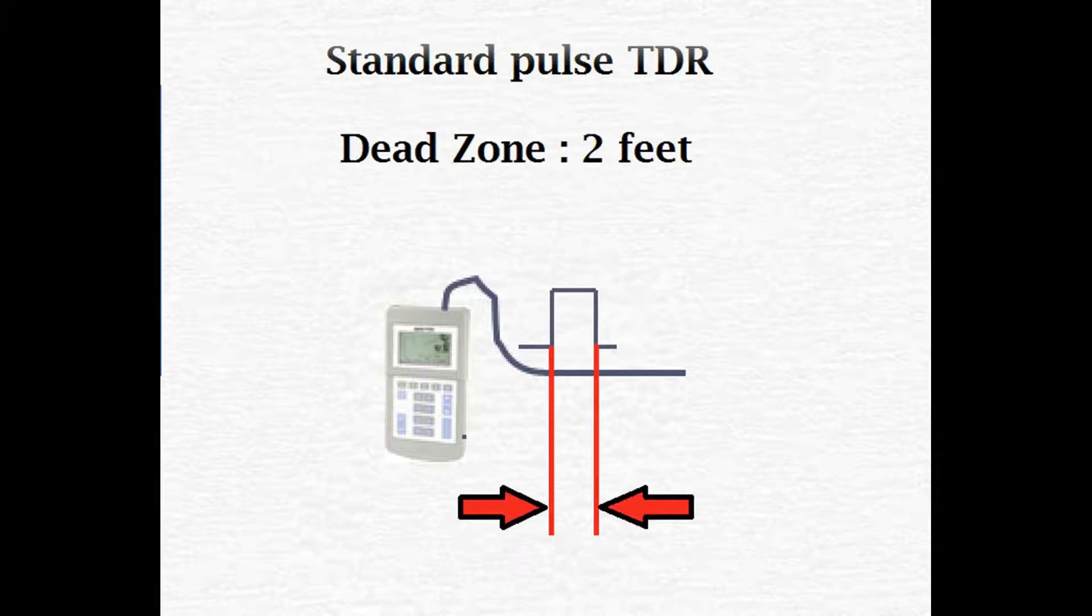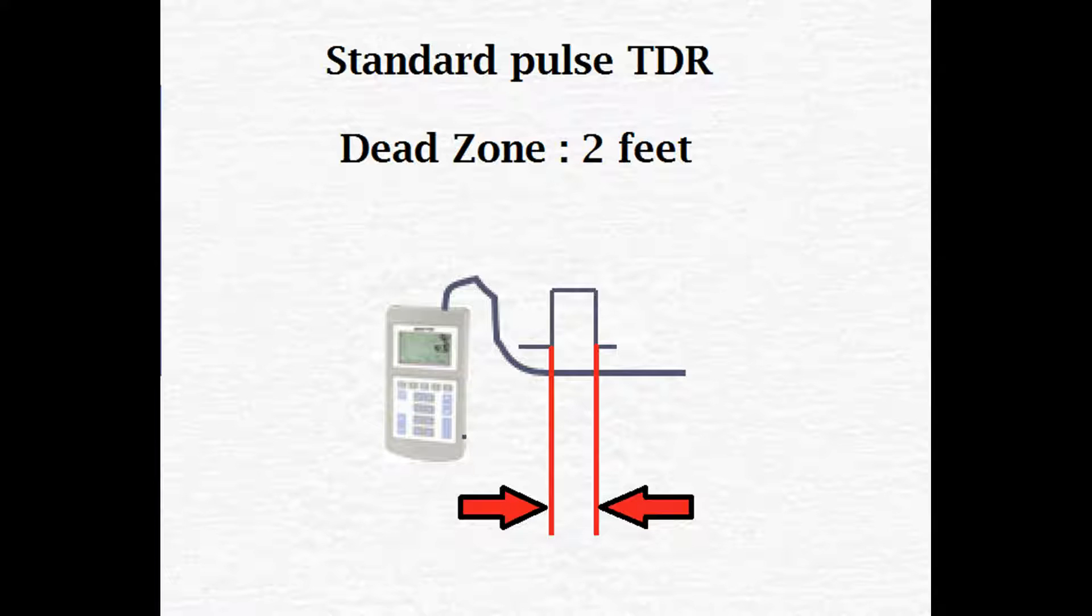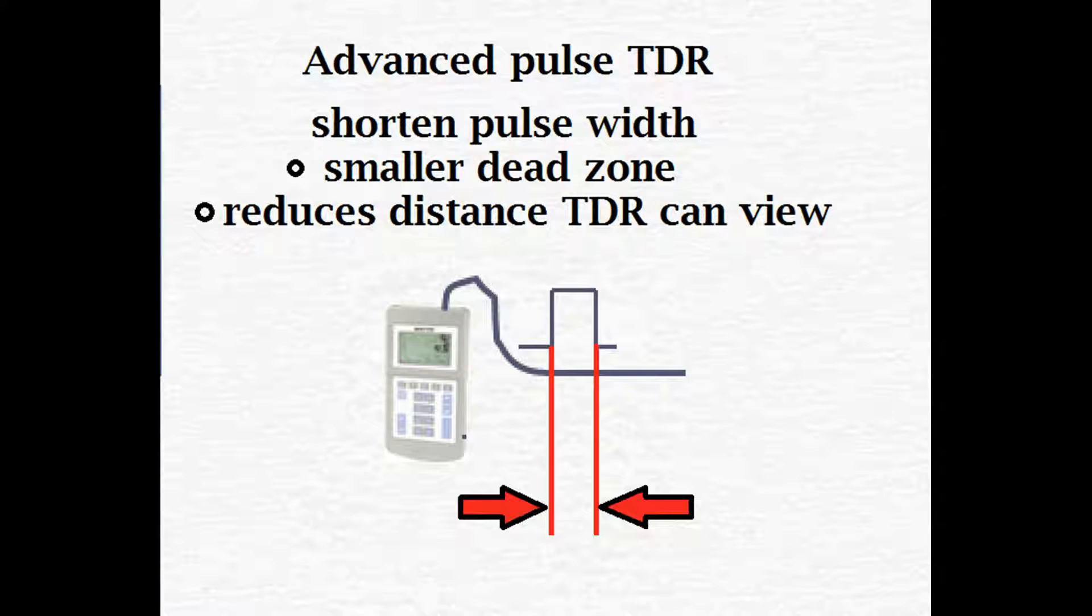The other problem is the actual pulse itself. The test set receiver is turned off during the width of the pulse. So on a standard TDR, this effectively gives you a dead zone where you can't see faults within the first two feet of the wire. More advanced TDRs let you change the width of this pulse. You can shorten it, giving yourself a smaller dead zone, but this also reduces the length of cable you can check.